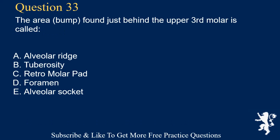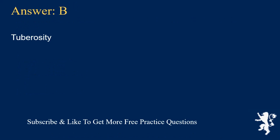Question 33. The area or bump found just behind the upper third molar is called: A. Alveolar ridge, B. Tuberosity, C. Retromolar pad, D. Foramen, E. Alveolar socket. Answer: B. Tuberosity.